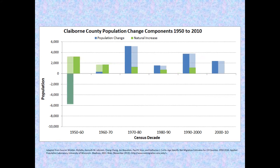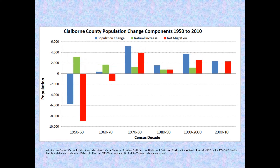There were obvious gaps to be accounted for. If we subtract natural increase from population growth, we can account for the differences as net migration — added here in red. Net migration was highly variable and accounted for much of the variation of population growth.